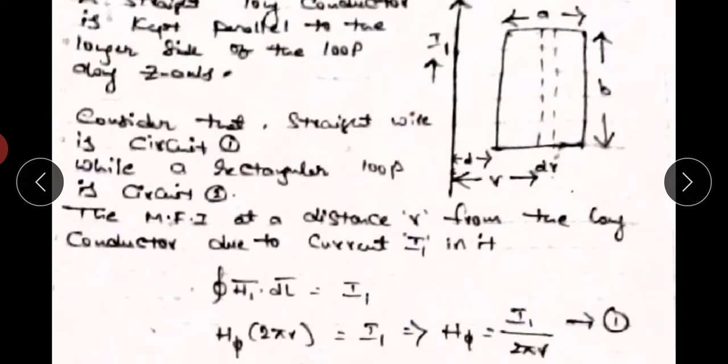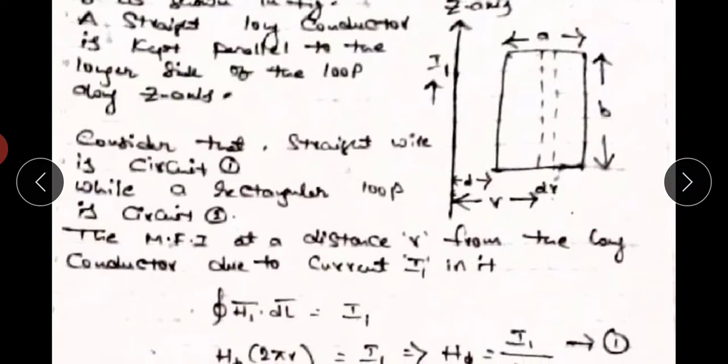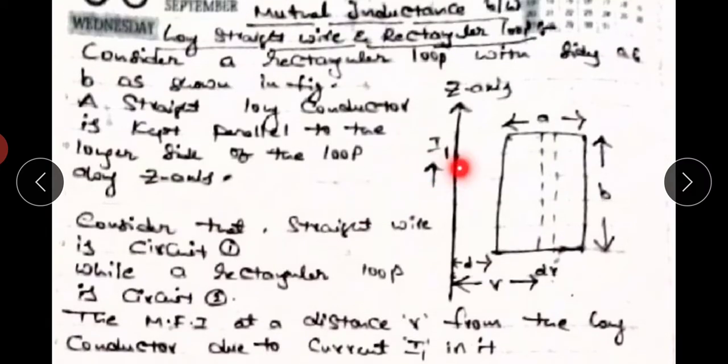Consider the straight wire as circuit 1 and the rectangular loop as circuit 2. The magnetic field intensity at a distance R from the long conductor due to current I₁ can be found using Ampere's circuit law. The current flowing in the straight conductor equals I₁.